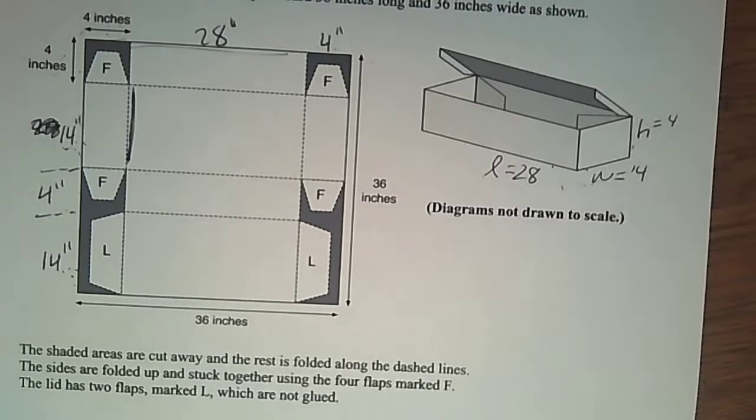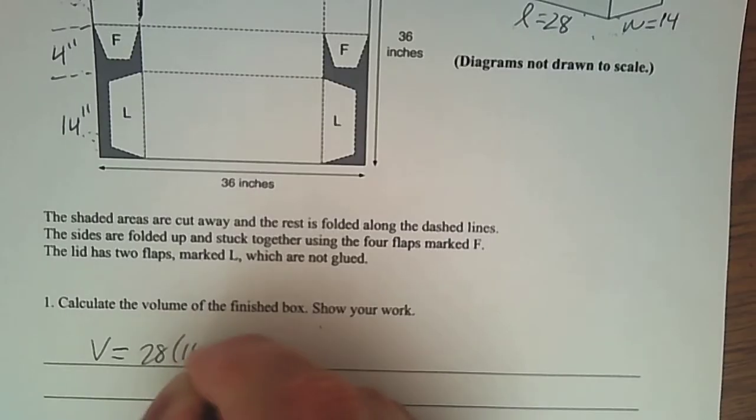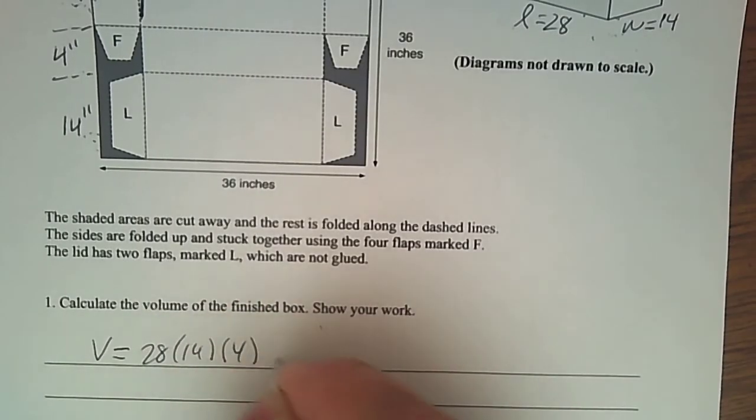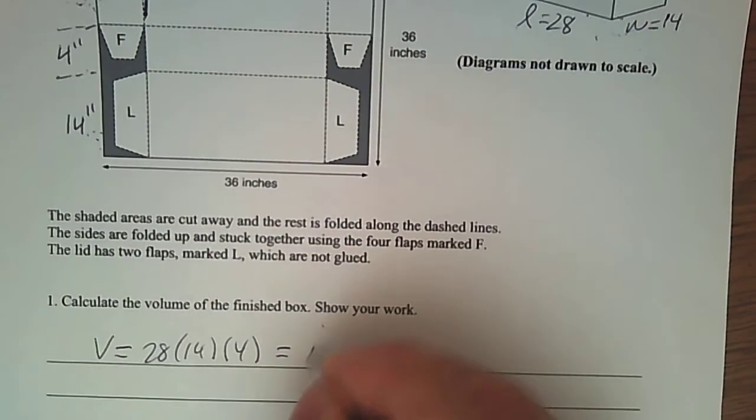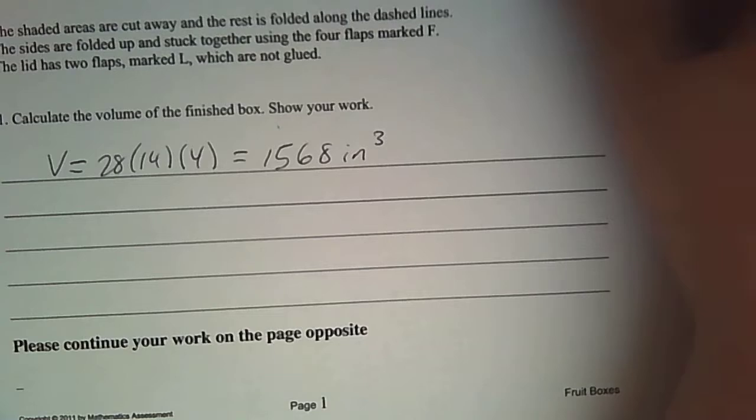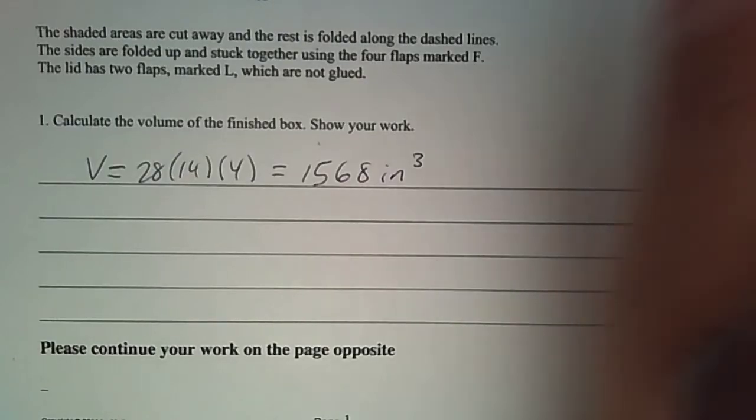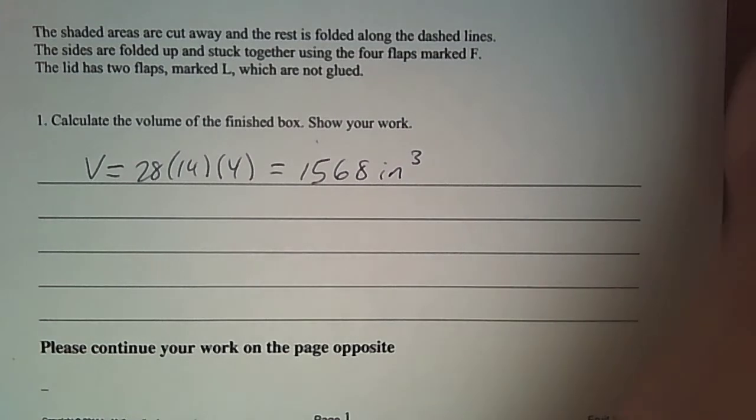How would I find the volume now that I know the length, the width, and the height? I just got to multiply them together. So 28 times 14 times four. That gives you a volume of 1,568 inches cubed. You can use your calculator for that. We're going to do Desmos on the second one. Make sure you have that available.